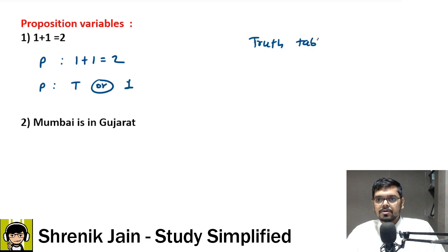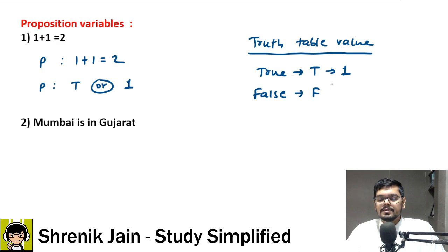As per the truth table value, if we have true proposition, then true is represented by T or 1. If we have a false sentence, then it is F or represented by 0.